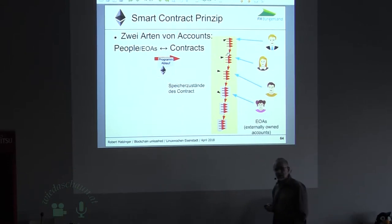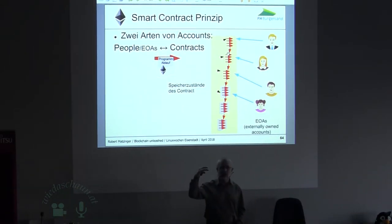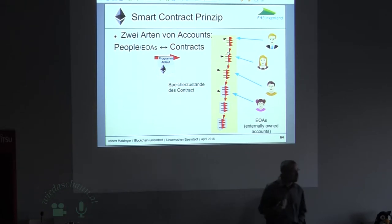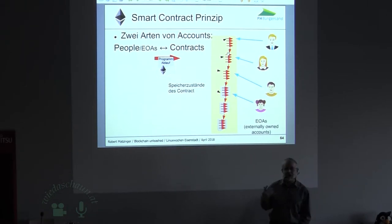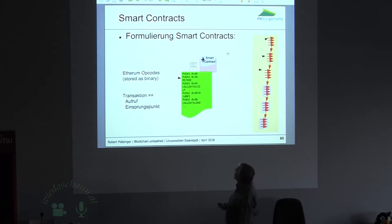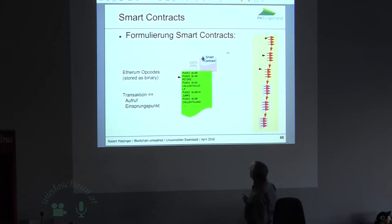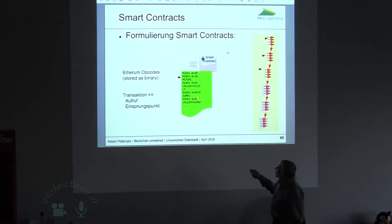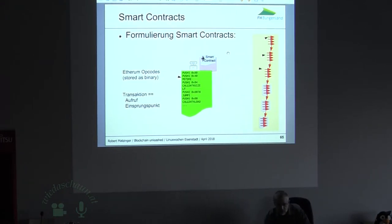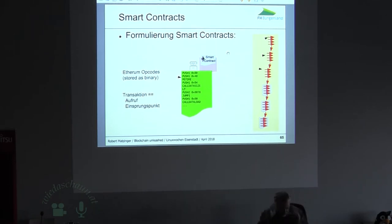Wie formulieren wir jetzt so einen Smart Contract? Wie formuliert man Vorschriften, wie etwas abzuarbeiten ist? Es gibt kaum jemanden, der mehr Erfahrung darin hat, als wir Informatiker — man formuliert das als Programm. In dem Fall als eine Art Maschinenprogramm. Das kann also in etwa so ausschauen, und wenn wir etwas Glück haben, können wir das auch im Ethereum-Node sehen.